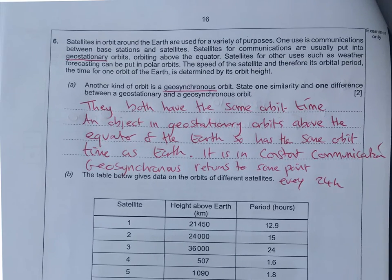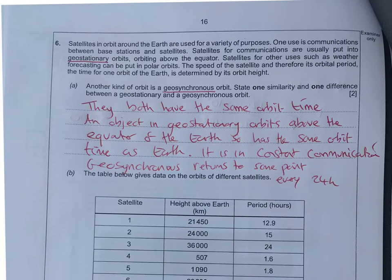Last question on satellites. Another kind of orbit is geosynchronous, and they've mentioned about geostationary. State 1 similarity and 1 difference. They both have the same orbit time, so they both take 24 hours to orbit. The big difference though is that one is above the equator. If it's above the equator, it's going to stay in the same position all the time so you can have constant communication. Geosynchronous, because it's not above the equator, it's going to take 24 hours to return to exactly the same point. So it can only communicate every 24 hours.